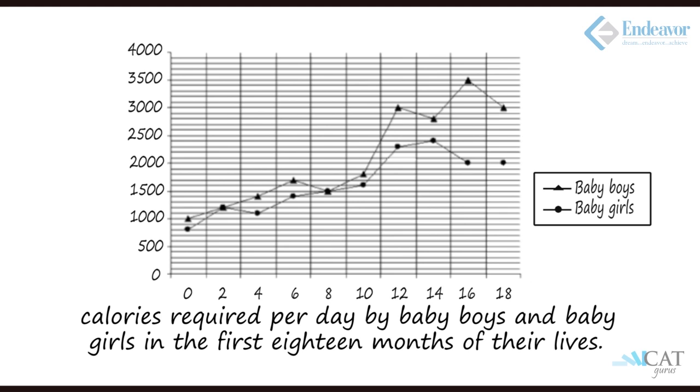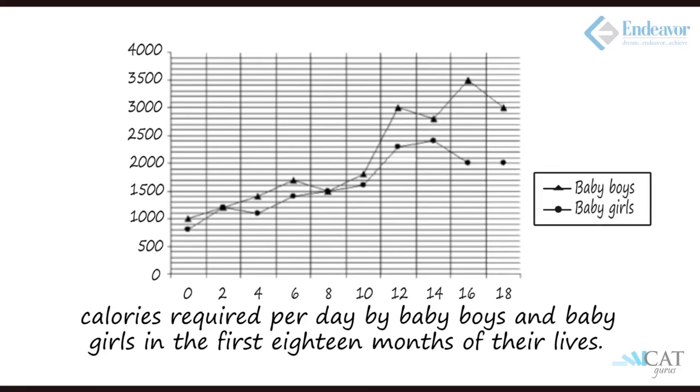Let's look at the bottom — calories required per day by baby boys and baby girls in the first 18 months of their lives. This graph gives us the calorie requirement of babies at 0, 2, 4, 6, 8 corresponding to 18 months for boys and girls separately. The boys' line is given in terms of triangles and the girls' in terms of circles.